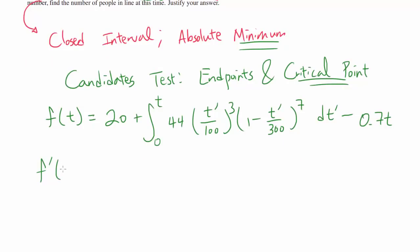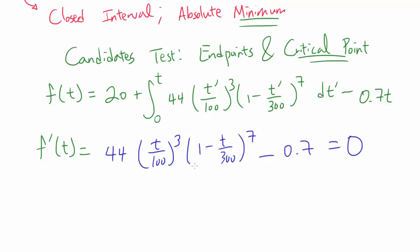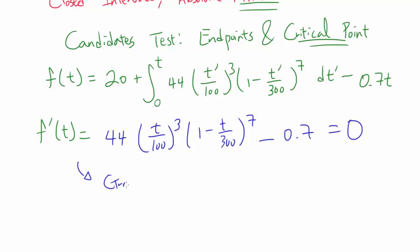And we want to find the critical point. So let's differentiate this. F prime of t. Using the second fundamental theorem of calculus, or first fundamental theorem of calculus, however you are defining it, you know when you differentiate this, you are simply going to plug t into this t prime. So you should get 44 times (t/100)^3 times (1 - t/300)^7. And of course when you differentiate 0.7t, we get 0.7. You set it equal to 0. And I highly recommend that you graph this in your TI-84.